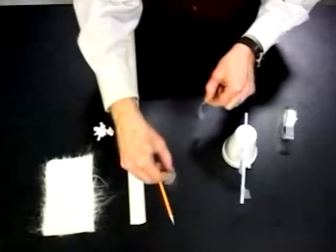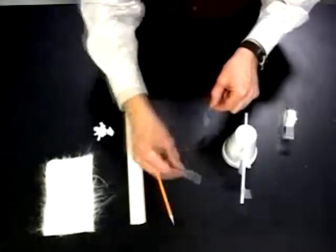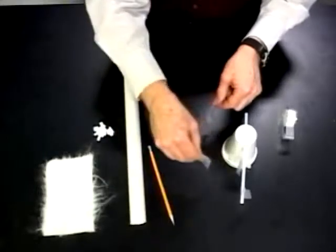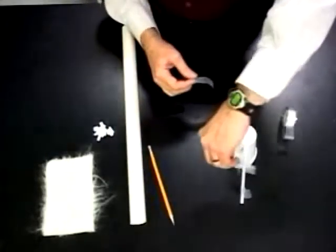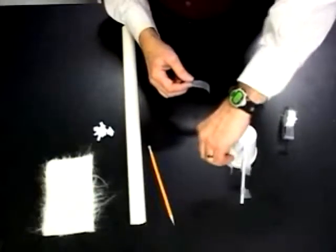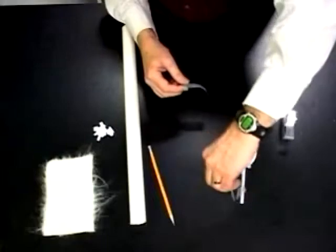When I bring the pointy tab tape near the pointy tab tape, we see they repel. I bring it near the blunt tape, they attract. When I bring the blunt tape near the blunt tape, they repel. When I bring it near the pointy tape, they attract.